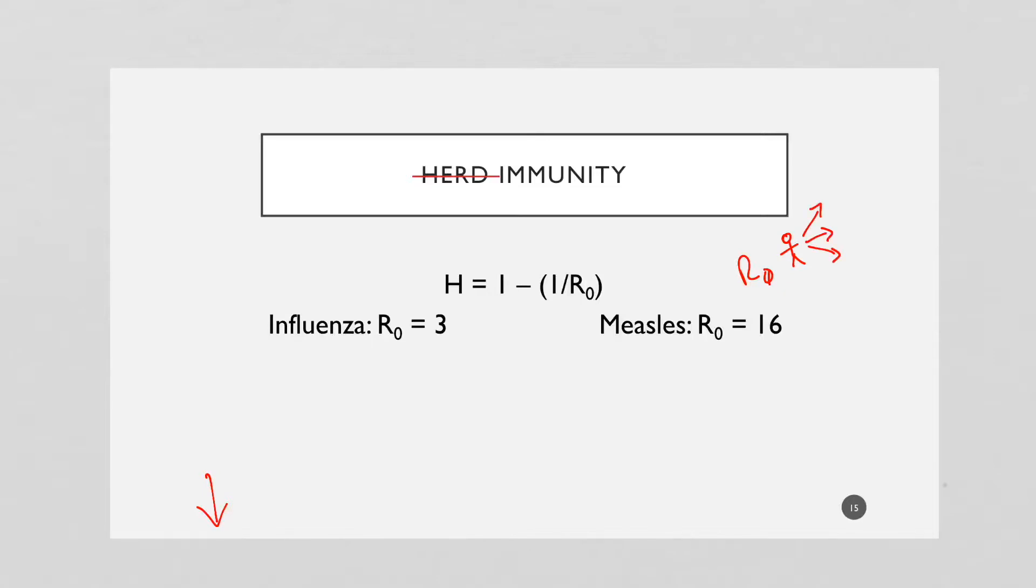In the case of influenza, the flu, it's about two to three. But for measles, it is closer to 16. This one person with measles, if you put them in a room with 100 people who are not immune, will infect 16 people. Those 16 people will infect another 16 people.